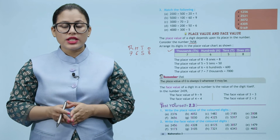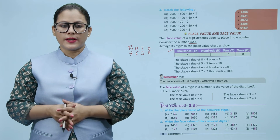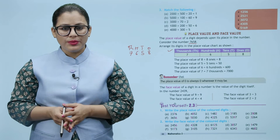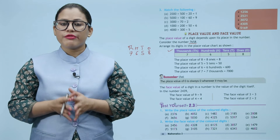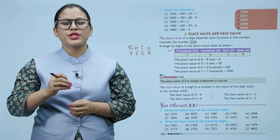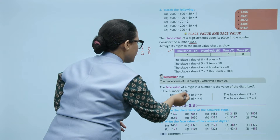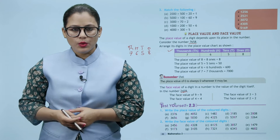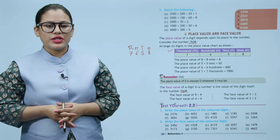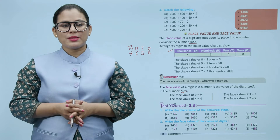The face value of a digit in a number is the value of the digit itself. In the number 2439, the face value of 9 is equal to 9, the face value of 4 is equals to 4, the face value of 3 is equals to 3, the face value of 2 is equals to 2. Kisi bhi digit ka face value, wo digit khud hota hai. Okay children, niche aapko exercise di gai hai jisme aapko place value aur face value nikalni hai — iski practice aap khud se karenge.